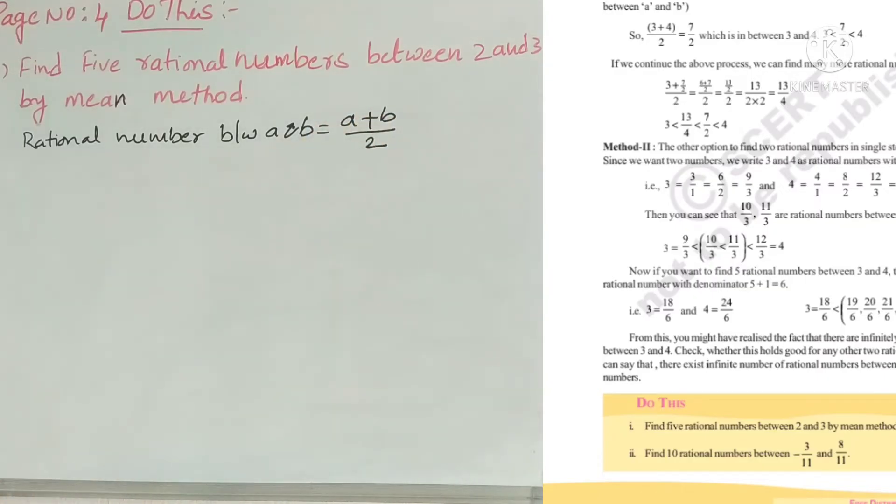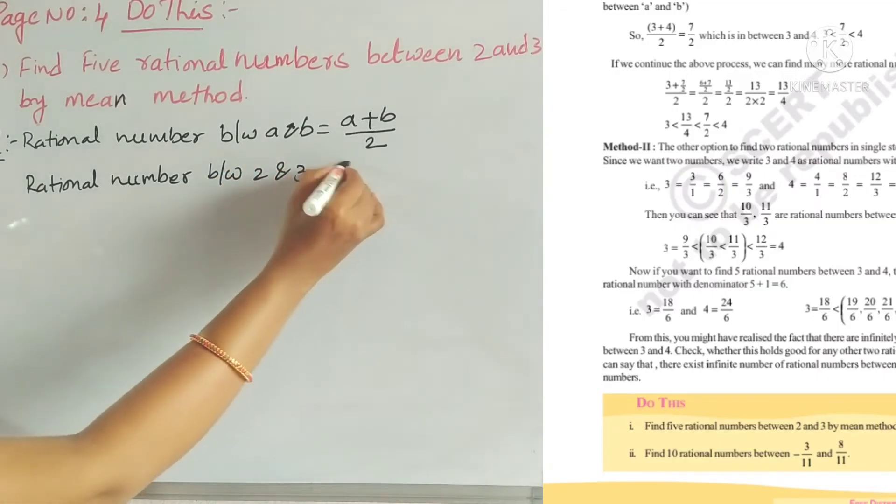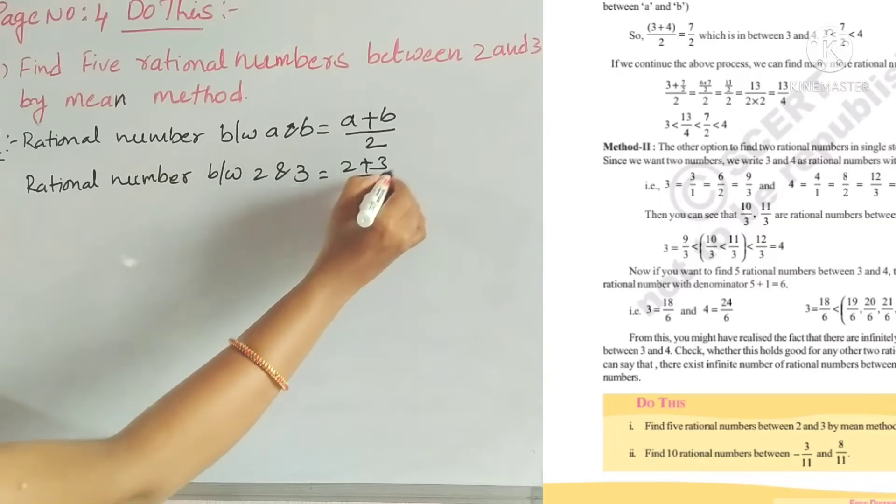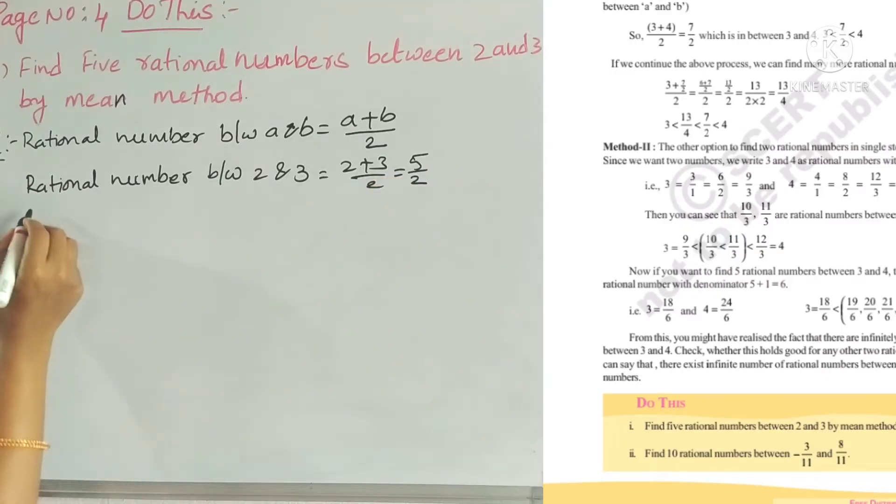We need to find 5 rational numbers between 2 and 3. So first, 2 plus 3 by 2 equals 5 by 2.